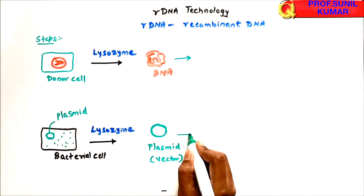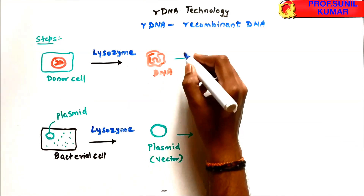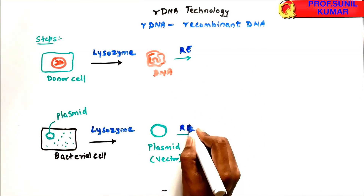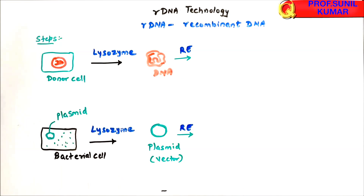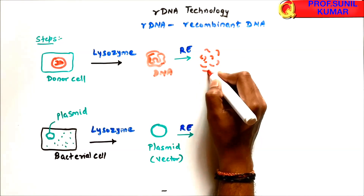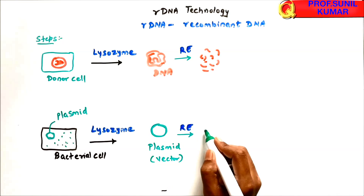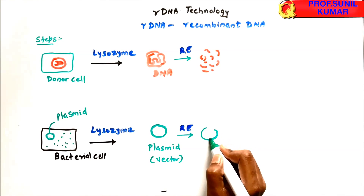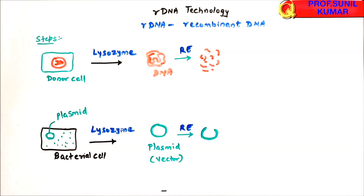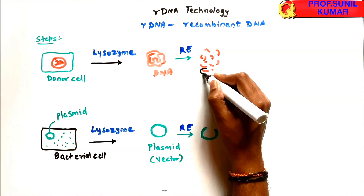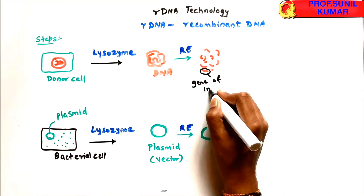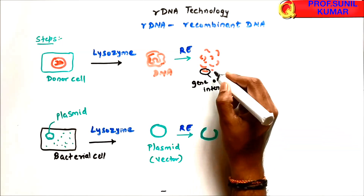The DNA and the plasmid are both treated by restriction endonuclease, abbreviated RE. Restriction endonuclease is going to cut the DNA at specific sites. The same restriction endonuclease will cut the plasmid as well. From the resulting fragments, we go for screening — searching through the pieces to find the gene of interest.